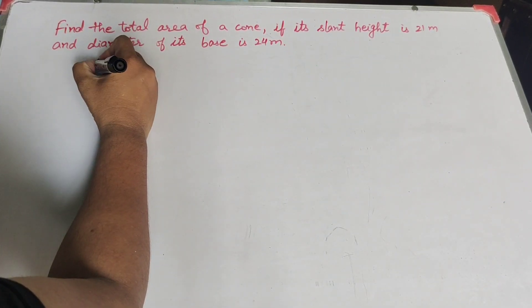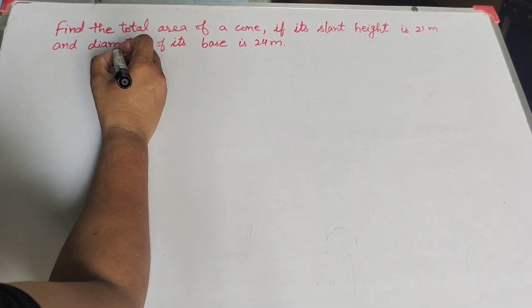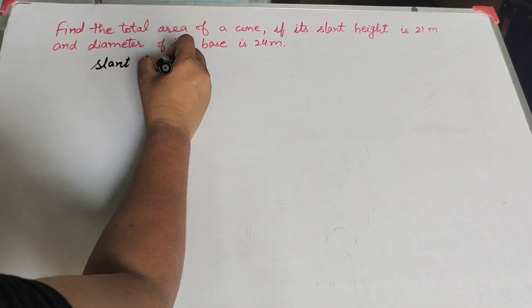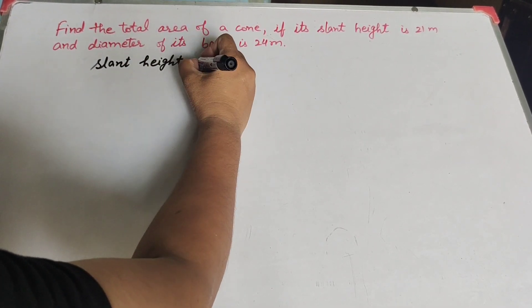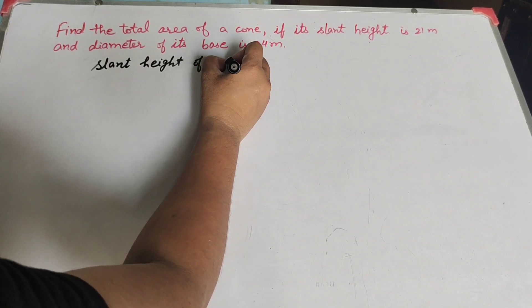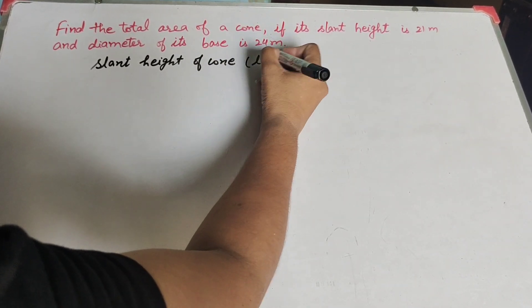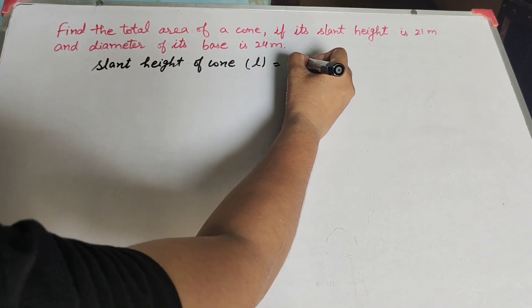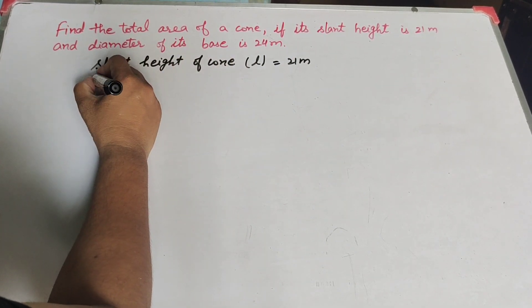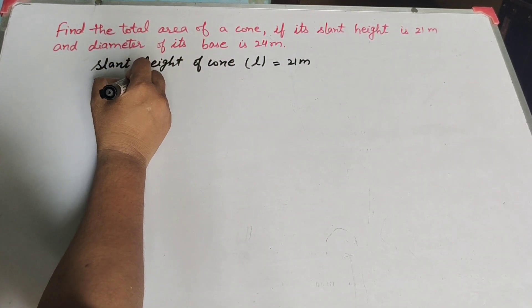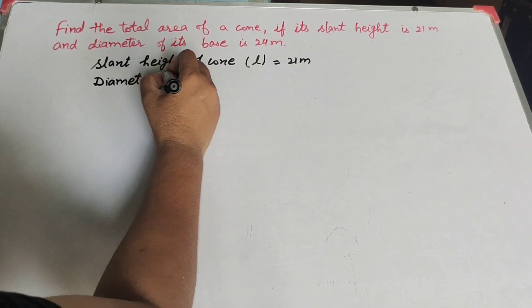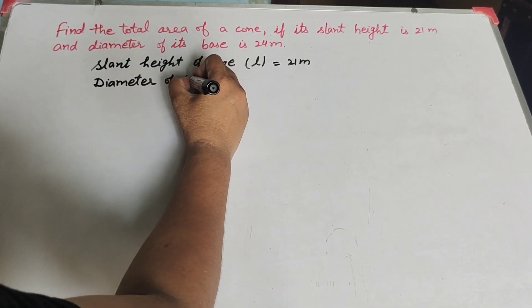In this question, given is the slant height. Slant height of cone, slant height is noted by L, it is equal to 21 meters. And diameter, diameter of base, it is equal to 24 meters.